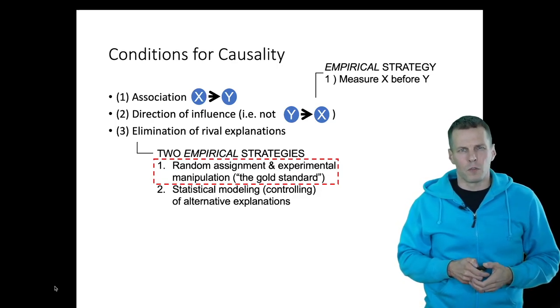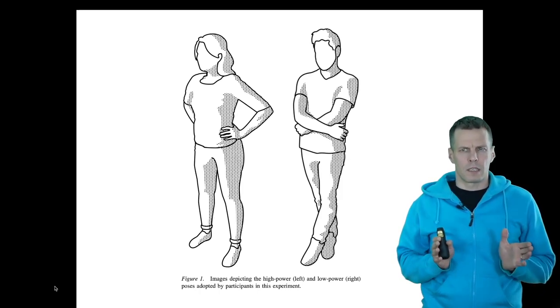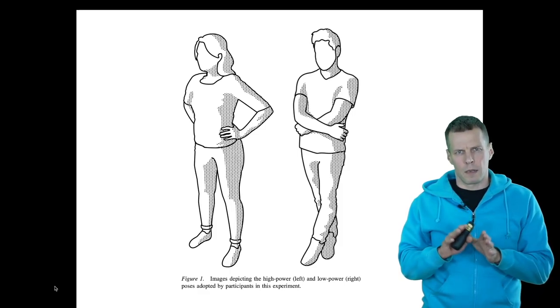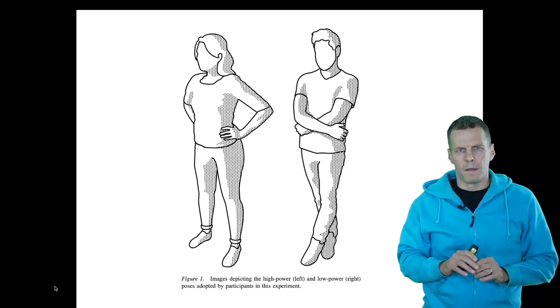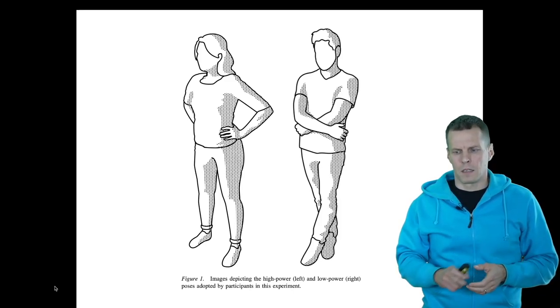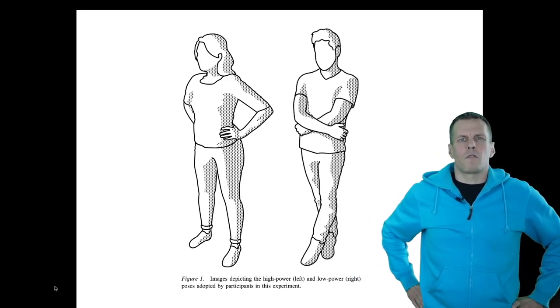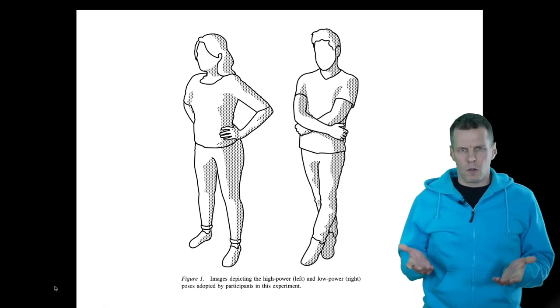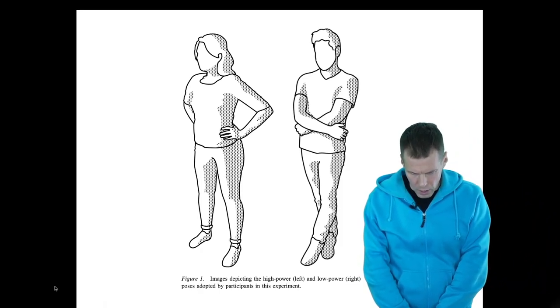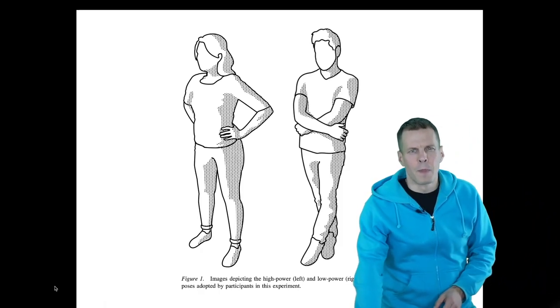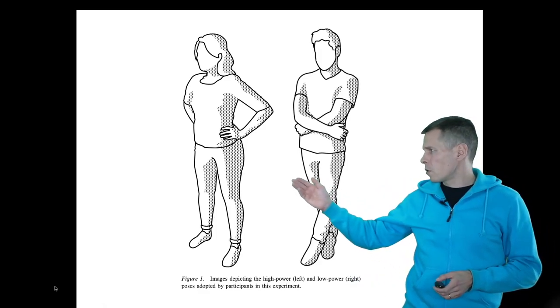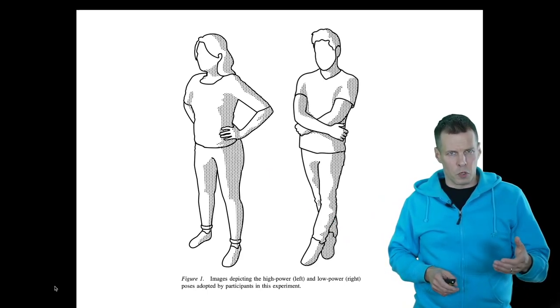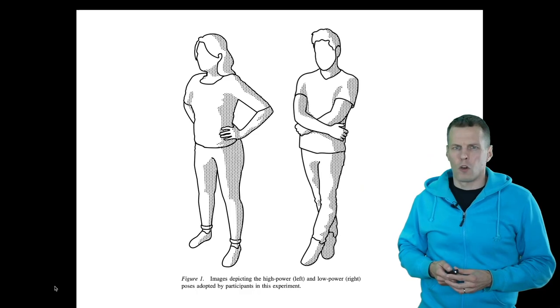What they do is they have a student sample split into two. The first half does this power pose and holds it for five minutes while they prepare a job talk. The control condition is this low power pose, holding a pose like that and doing the same. The hypothesis is that these people who perform the power pose do better in the job talk than these people who do the low power pose.